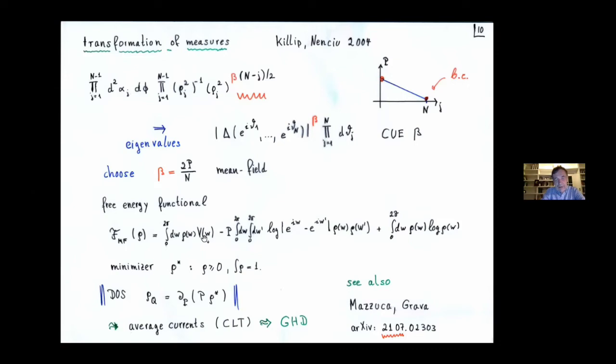Then there's a question from the audience: do you have an expression for ρ*? A final expression? The speaker responds: in general no — you just have to do a numerical simulation to find the minimum. However, when you look in the Matsuka and Grava paper, there is a fairly explicit formula as long as you make the potential linear — then there's something called the Heun equation. So in these simple cases you have an explicit analytic expression. For more general potentials you just have to solve numerically.